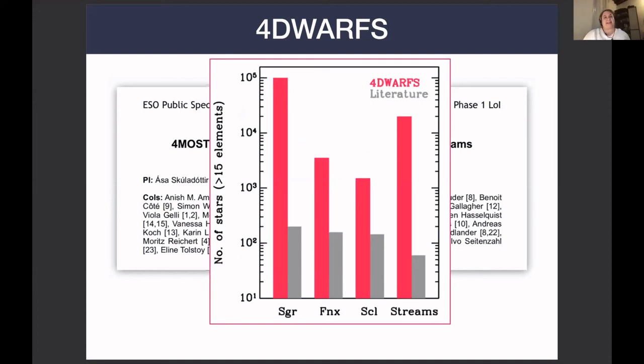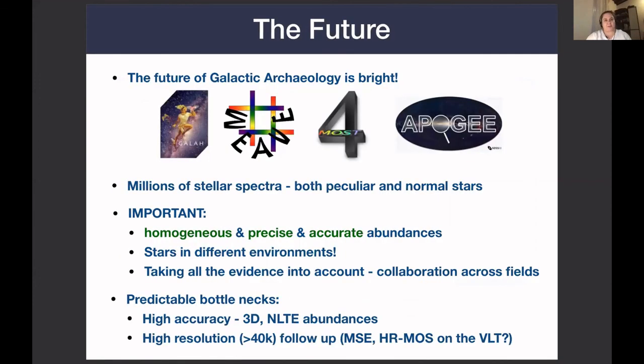And with that, I leave you my final slide. The future is bright. We have many upcoming spectra. But what is important, I think is really important, is collaboration across fields. We need to be able to explain all the data. Both inputs from theorists and observers is very useful, especially if it's done in collaboration. And it's very obvious that we will have a bottleneck when it comes to higher resolution follow-up, because we will find many, many interesting objects and everyone will want to look at them.